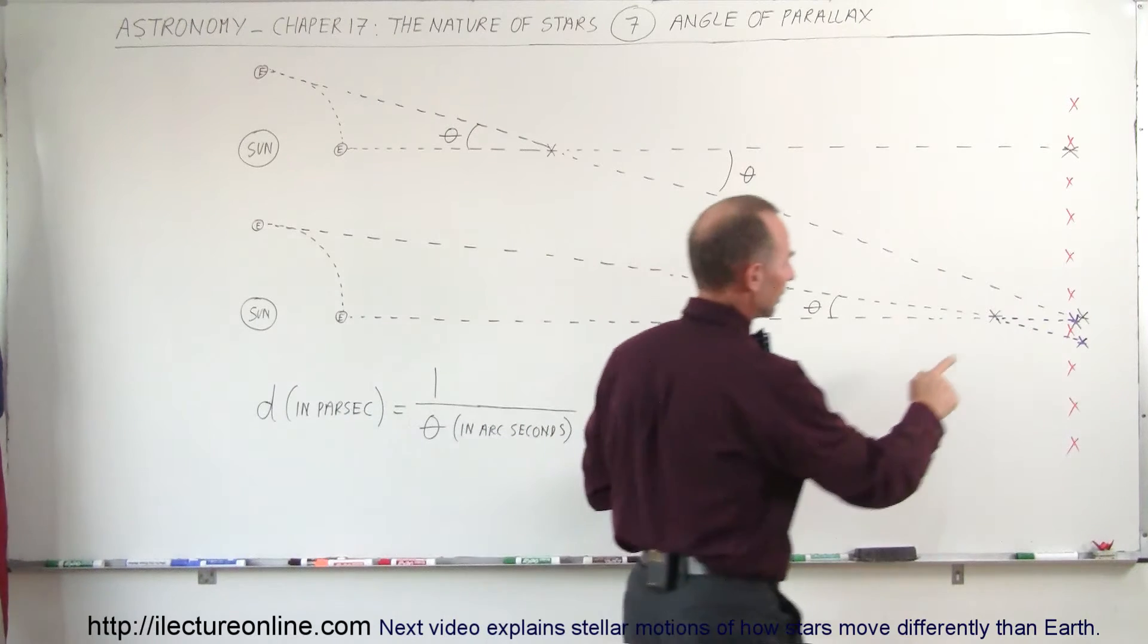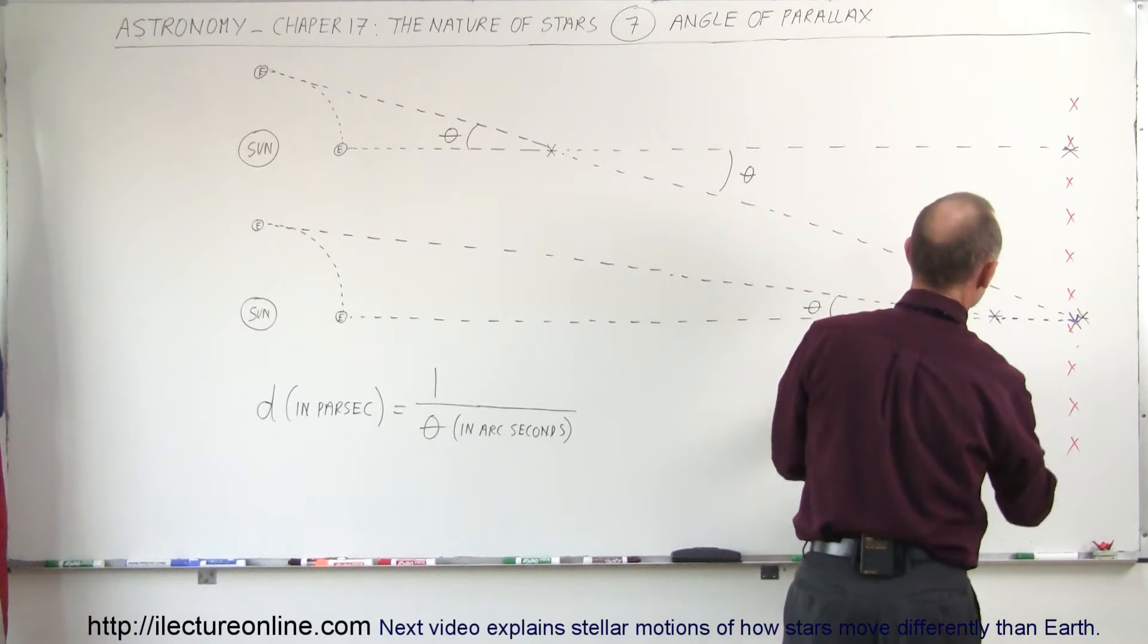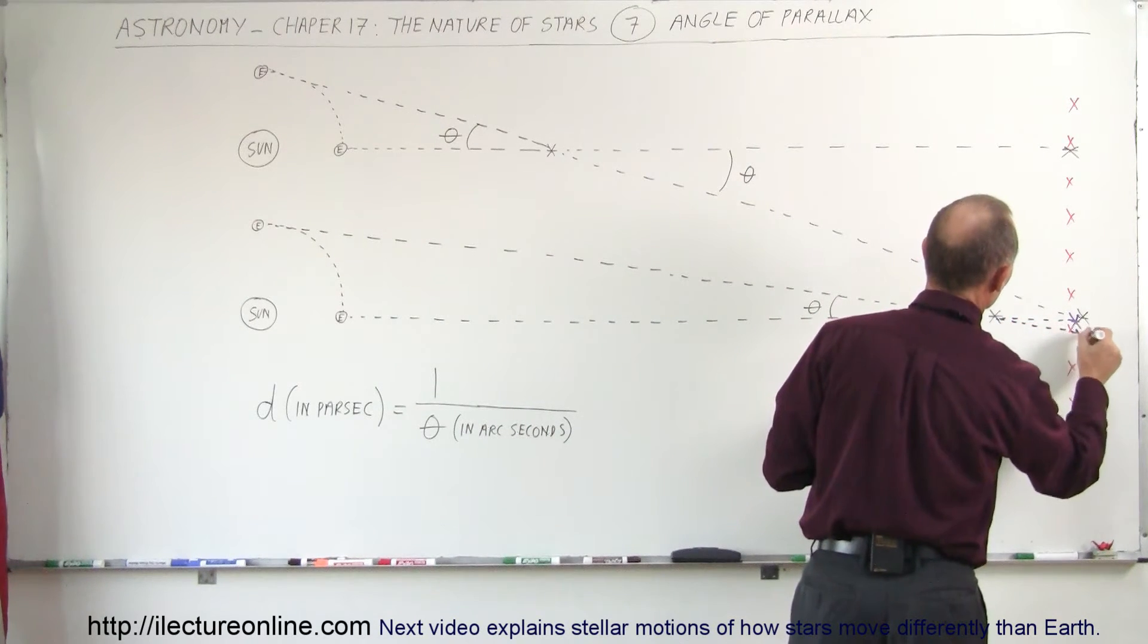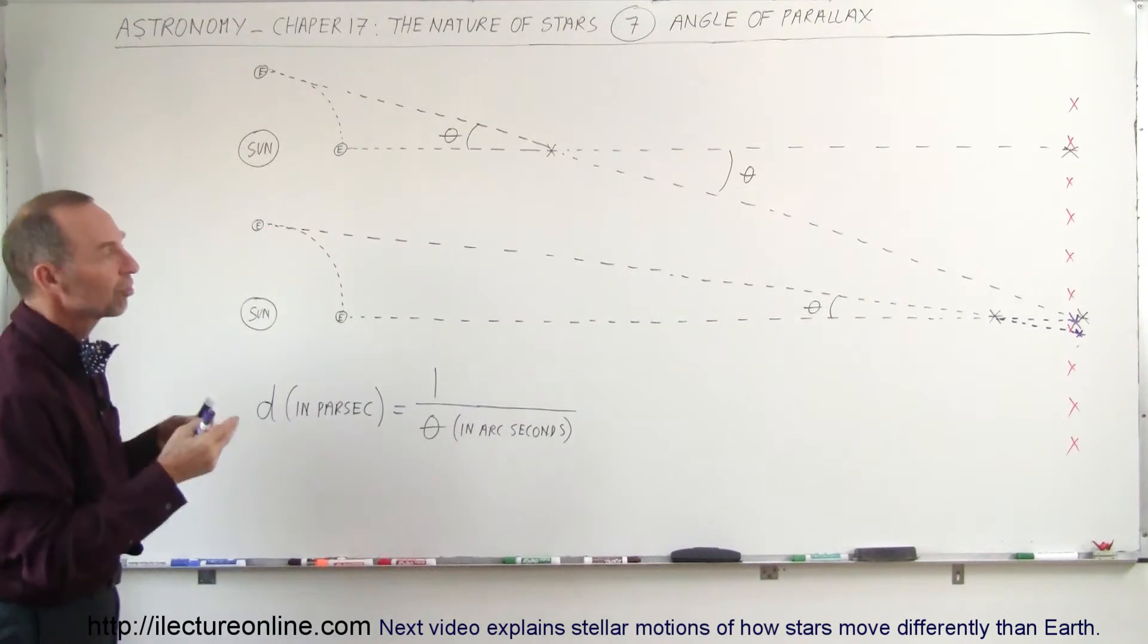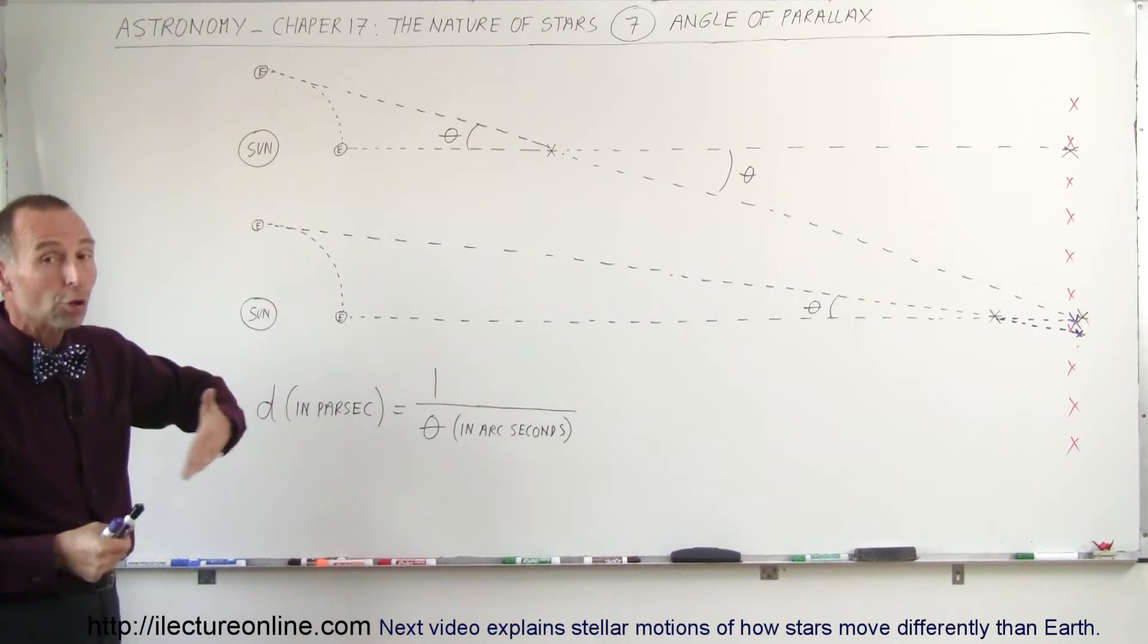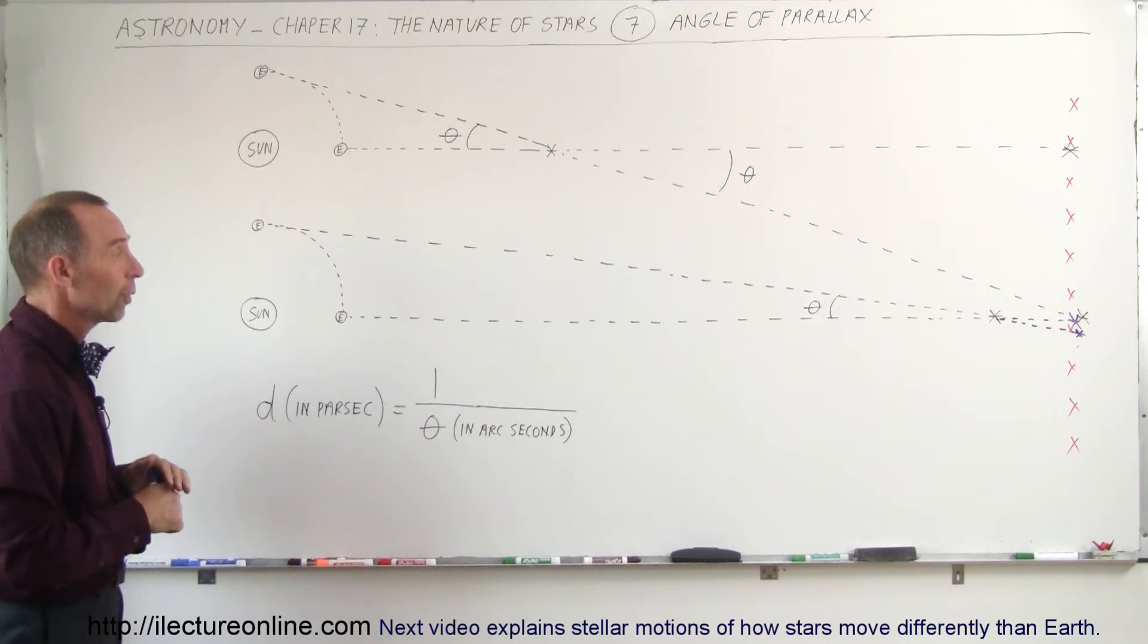I didn't quite draw that correctly, did I? Let me try that again. So it's actually like this. So it would only be a minuscule movement in the star's position relative to the far away stars and so therefore we would know that the star is much farther away.